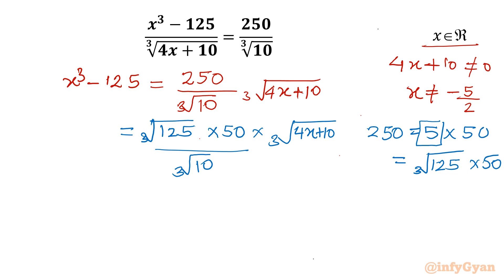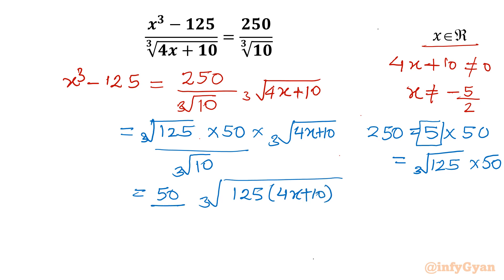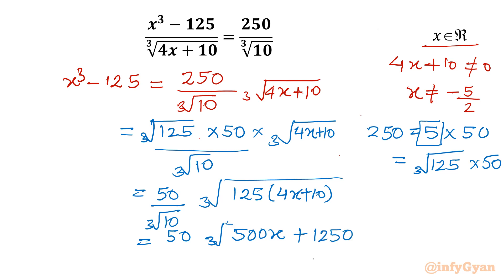Now I will merge ∛125 with ∛(4x+10) to get ∛(125·(4x+10)). So the expression becomes 50 · ∛(125·(4x+10)) / ∛10. Taking the product inside: 125 × 4 = 500x terms and 125 × 10 = 1250, giving 50 · ∛(500x + 1250) / ∛10, which simplifies to 50 · ∛(50x + 125).